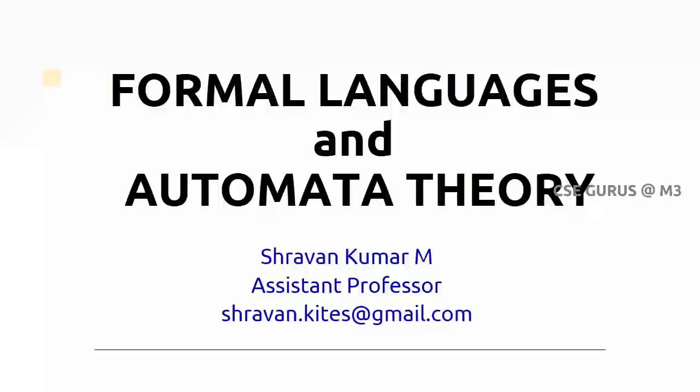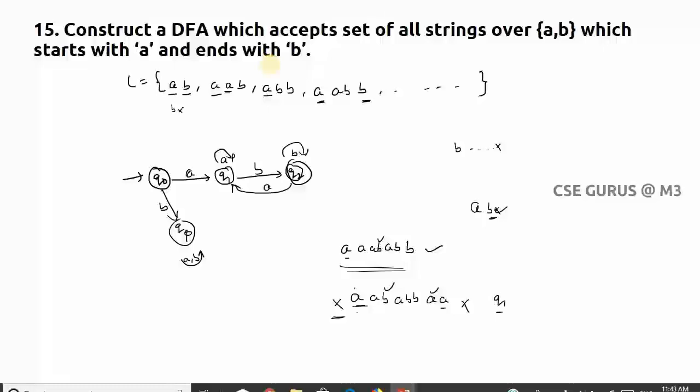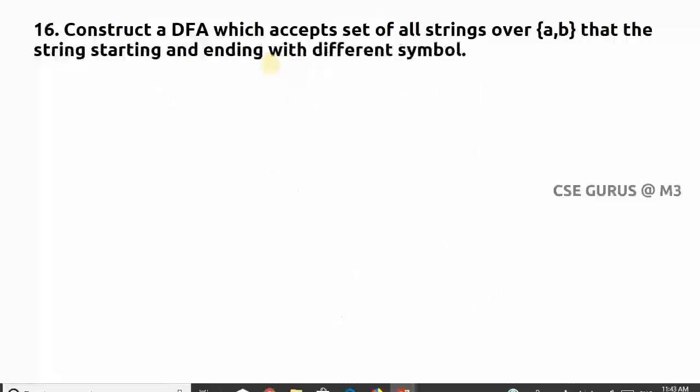Hi friends, welcome to the class of formal language and automata theory. Coming to question number 16: construct a DFA which accepts the set of all strings over 'a' and 'b' that start and end with different symbols.